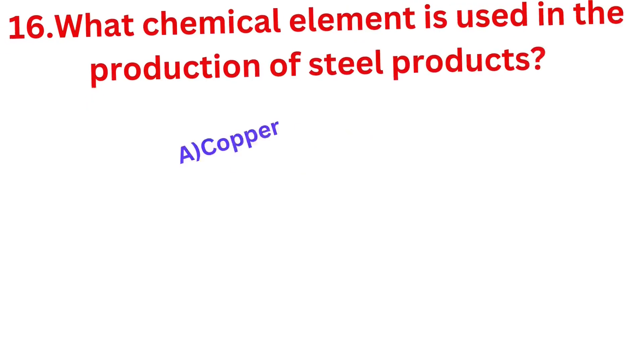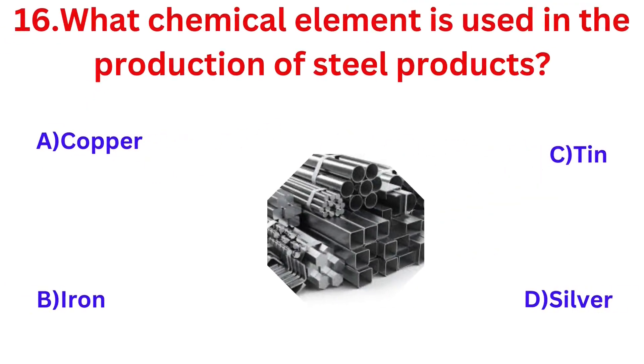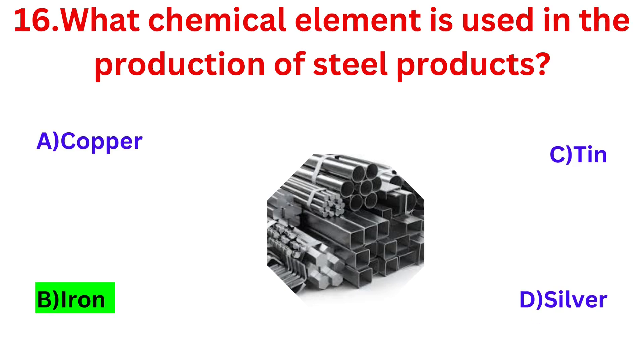Which chemical element is used in the production of steel products? Option B. Iron.